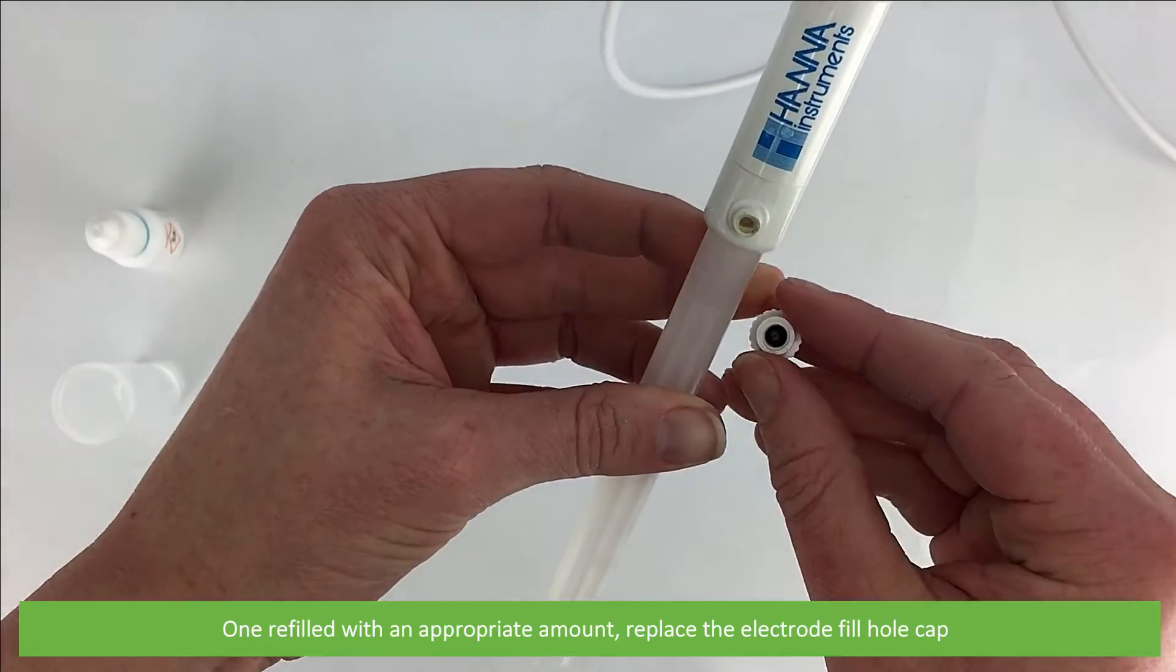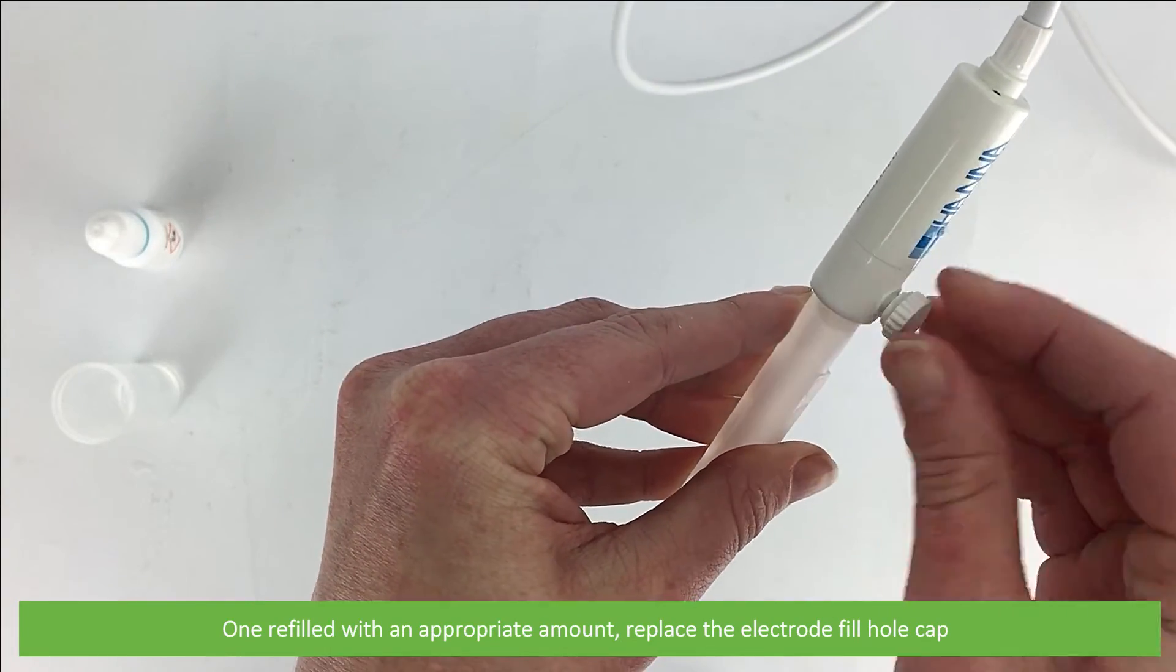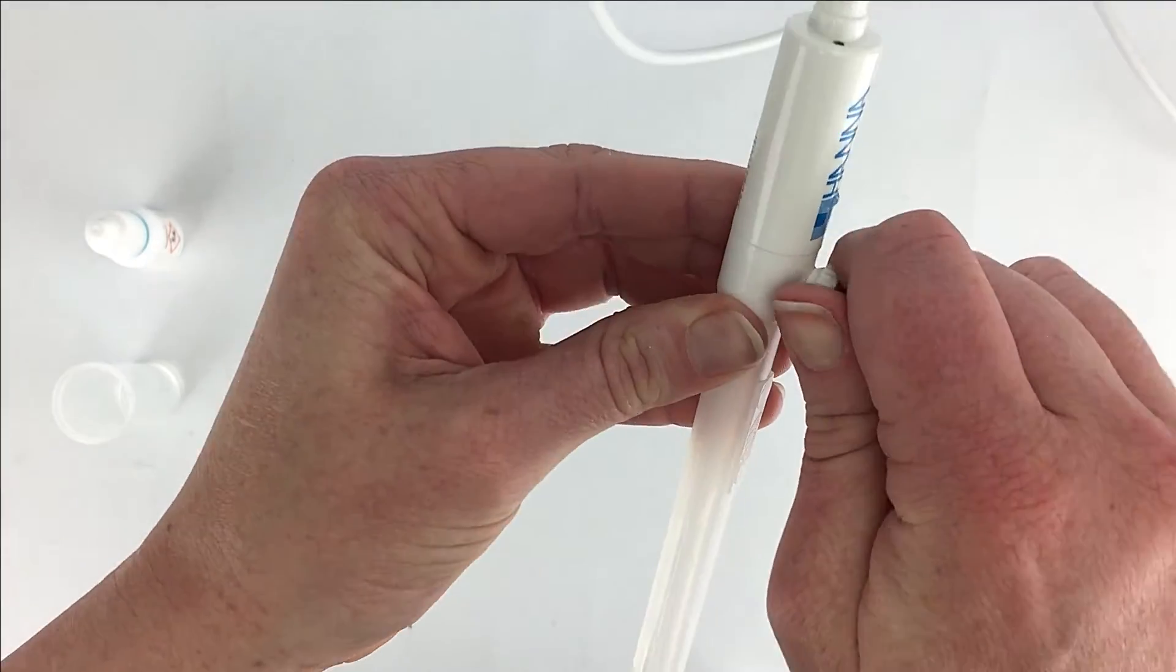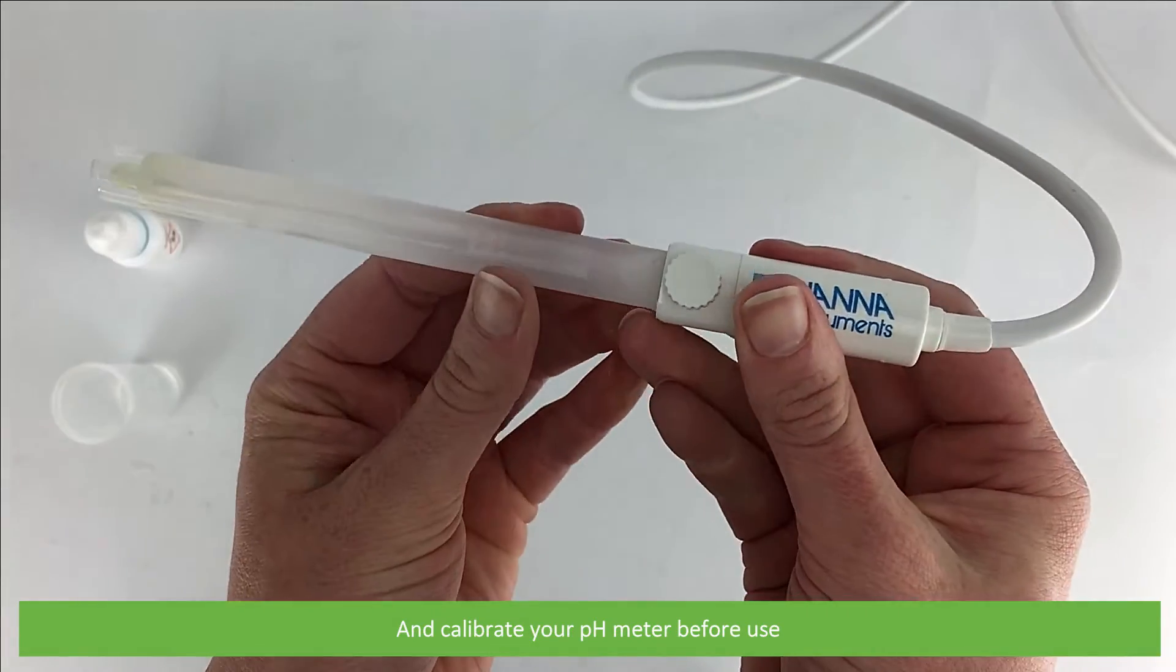Once refilled with the appropriate amount, replace the electrode fill hole cap and calibrate your pH meter before use.